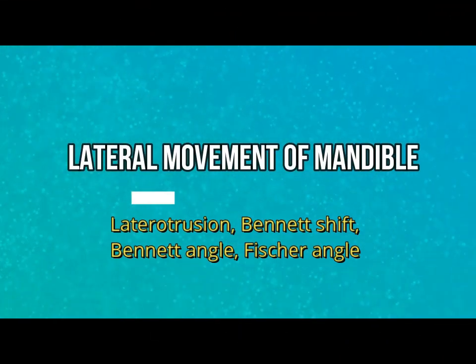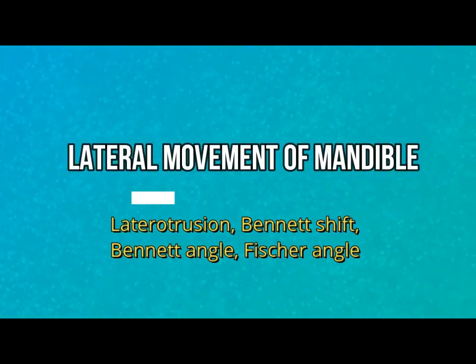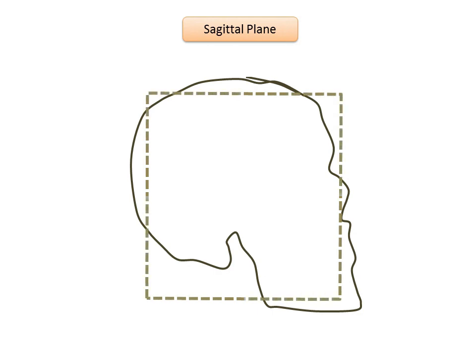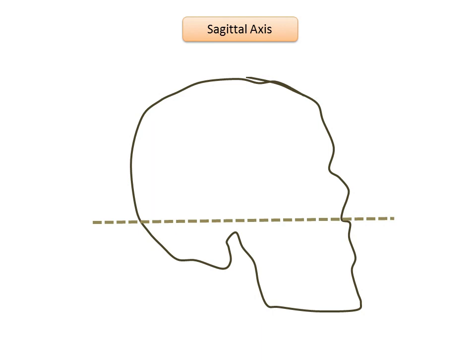Lateral movement of the mandible occurs when the jaw moves either to the right or the left side, away from the mid-sagittal plane. To better understand this, let's recap: the sagittal plane is the vertical plane that divides the face into right and left halves. The sagittal axis is an anterior-posterior imaginary axis which runs along the mid-sagittal plane.